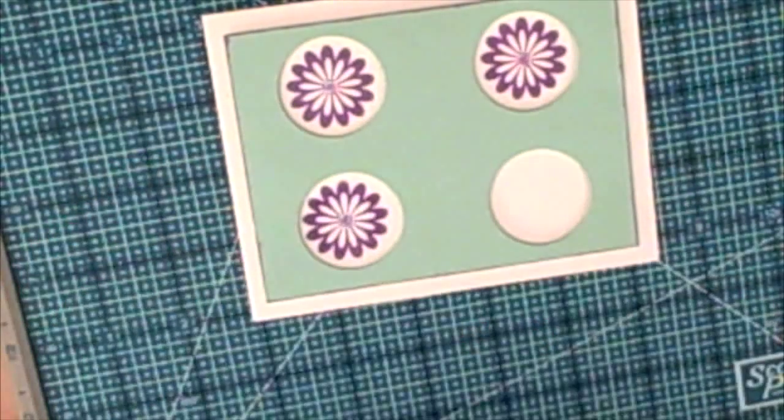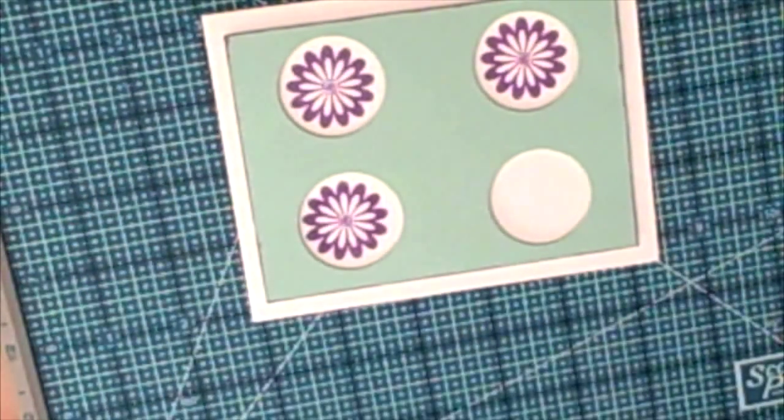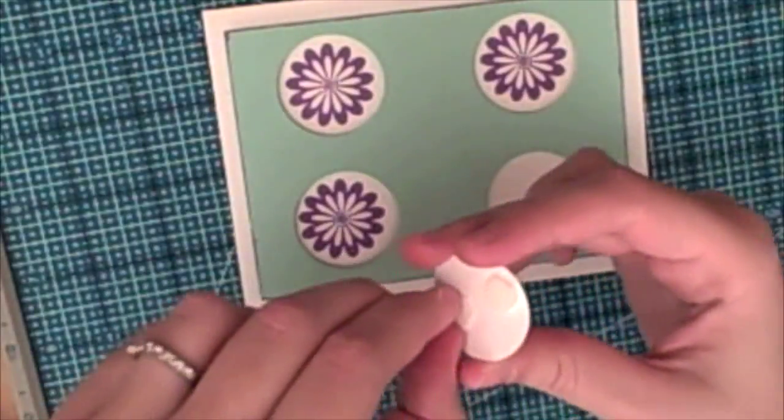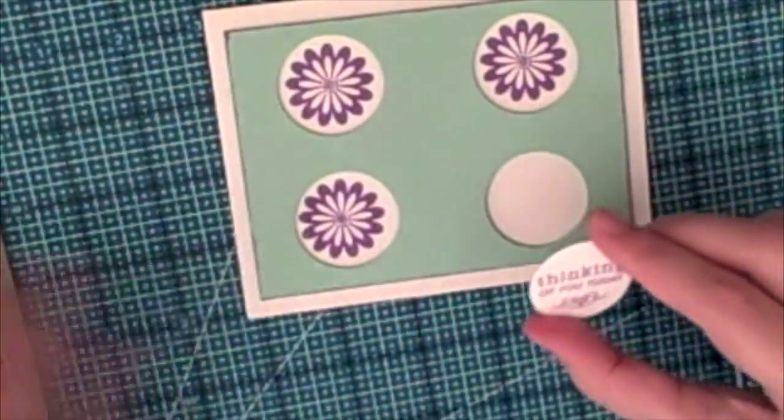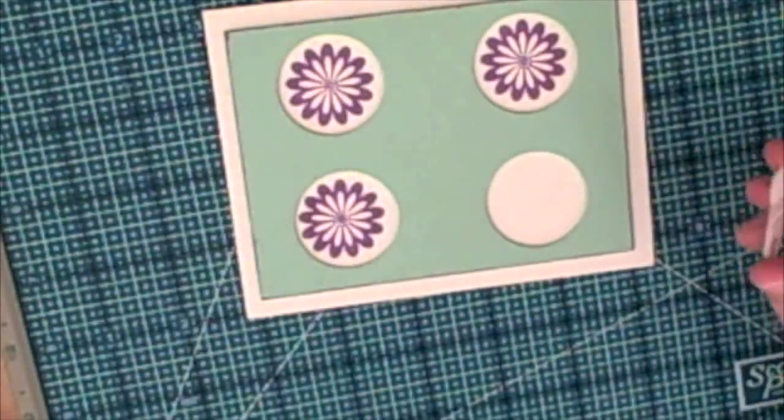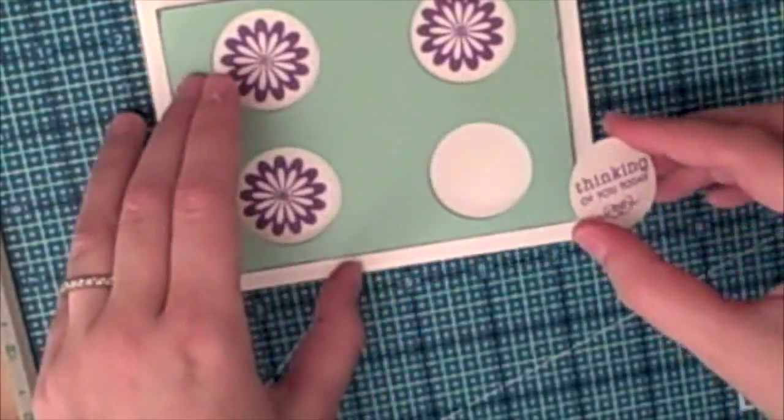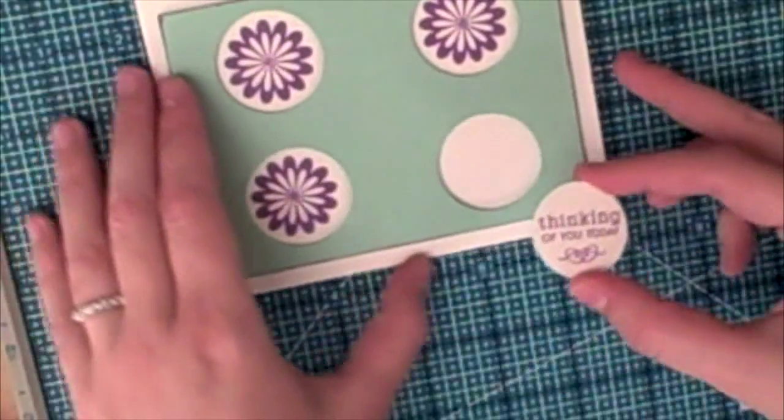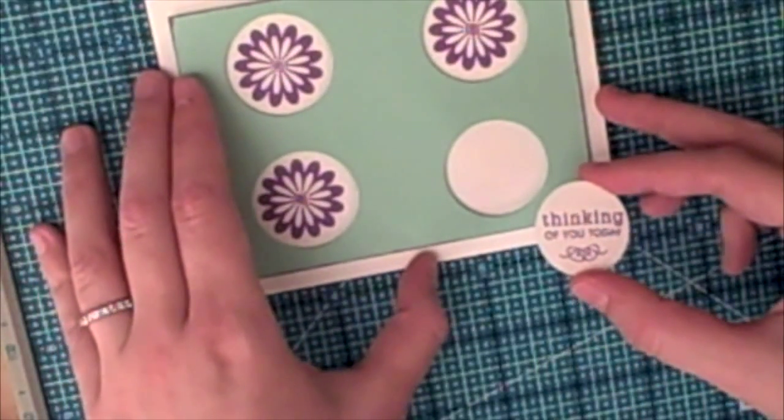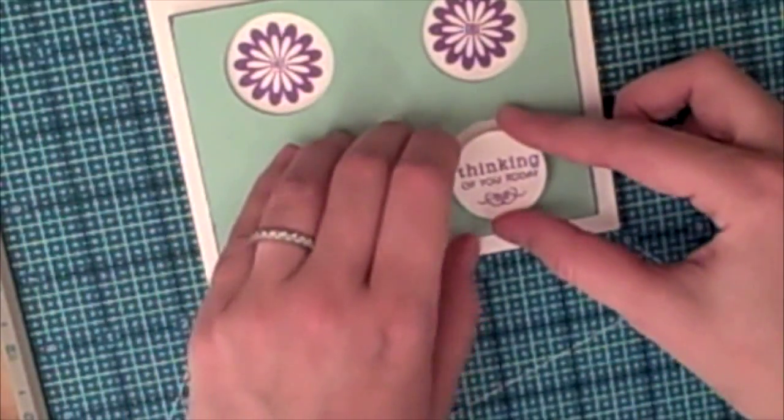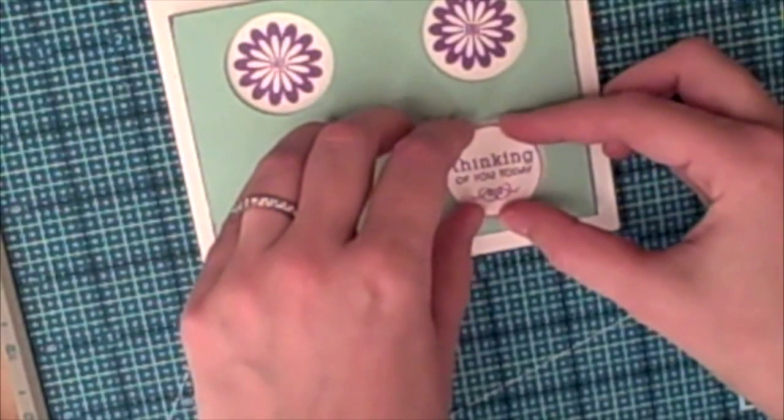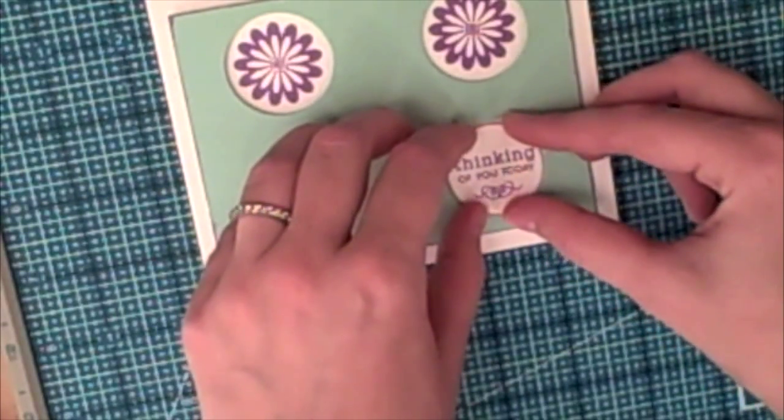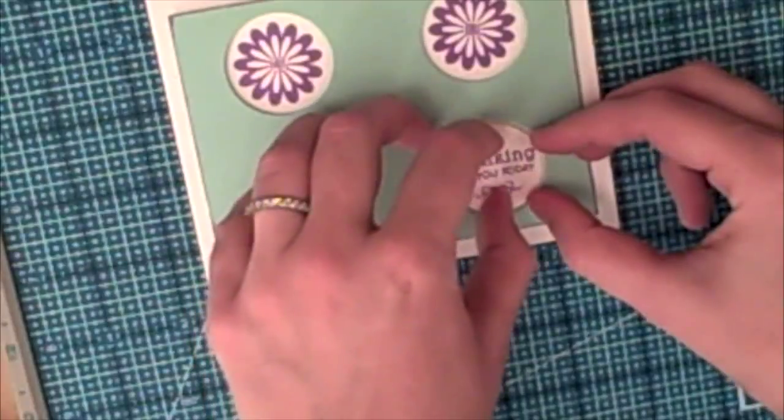And then I'm going to work again with the Orchid Opulence dye ink with this flower that's from the Garden of Life set from Paper Tray Ink, which is a really beautiful flower set. So I just stamped those flowers in three of the circles, just straight onto the white card base. And then I put some dimensionals on the back of that circle we punched out earlier, and I'm going to put that in the last circle. And that dimension kind of just adds an extra something to the card. The cool thing about this card is you could make it for a baby and put little animals in the circles and put congratulations in the other circle.